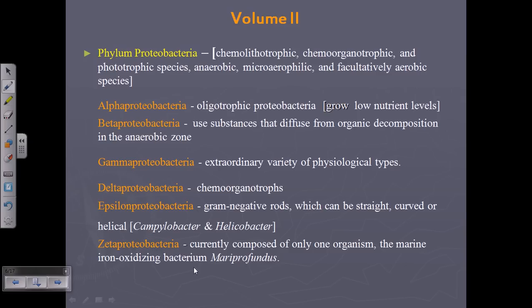An important group within the epsilon Proteobacteria includes Campylobacter and Helicobacter pylori. Helicobacter pylori can be found inside your stomach and can survive the acid stress — concentrated HCl — secreted by your stomach cells. They have special mechanisms to survive this harsh environment, making Helicobacter a very important area of growing research. They belong to epsilon Proteobacteria and are gram-negative in nature with rods that can be straight, curved, or helical.